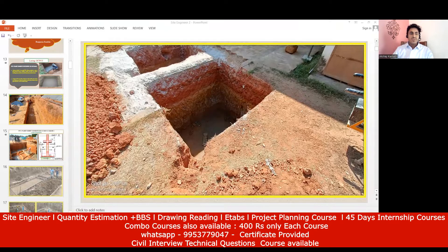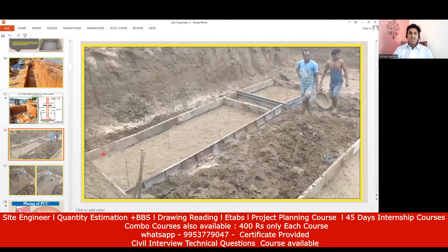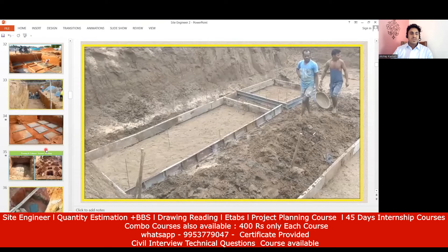Similarly, coming to the PCC quantity, you can see here this is the footing length including the PCC offset, this is the footing breadth including the PCC offset, and this is the depth of the PCC. If I multiply all three things, I get the PCC quantity. The same logic applies — length, breadth, and thickness.